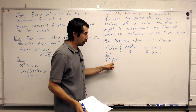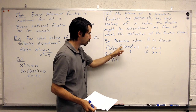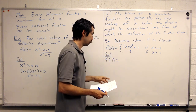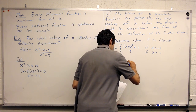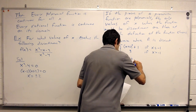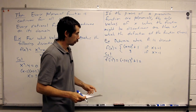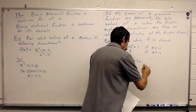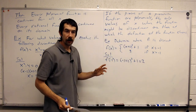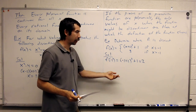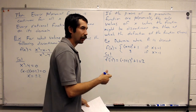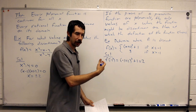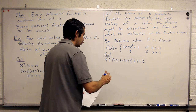At x equals negative 1, which rule do we use — the top or the bottom? We use the top one because negative 1 is less than or equal to negative 1. This gives us (negative 1 plus 2) cubed plus 1, which is 1 cubed plus 1, equals 2. So the function is defined at negative 1 and its value is 2. Now we need to evaluate the limit, and to evaluate the limit of a piecewise function, we need to do the left-hand limit and the right-hand limit.